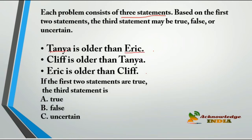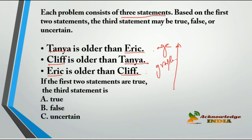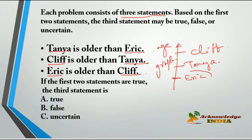Problem 1: Tanya is older than Eric. Cliff is older than Tanya. Eric is older than Cliff. Using an age graph — Eric is the youngest, Tanya is in the middle, and Cliff is the oldest. The third statement says Eric is older than Cliff, which is wrong. So the answer is false.